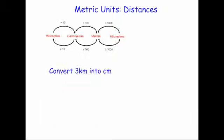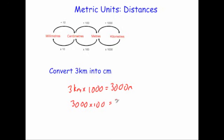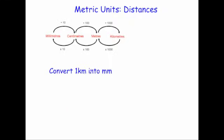Next, convert 3 kilometres into centimetres. This time we need to go from kilometres to metres and then from metres to centimetres. First, 3 kilometres times 1000 equals 3000 metres. Then, 3000 metres times 100 — add two zeros — equals 300,000 centimetres.